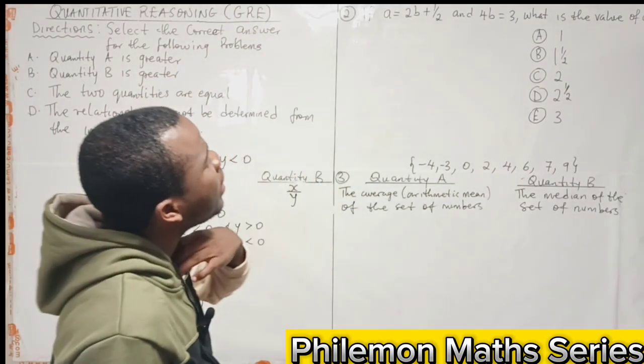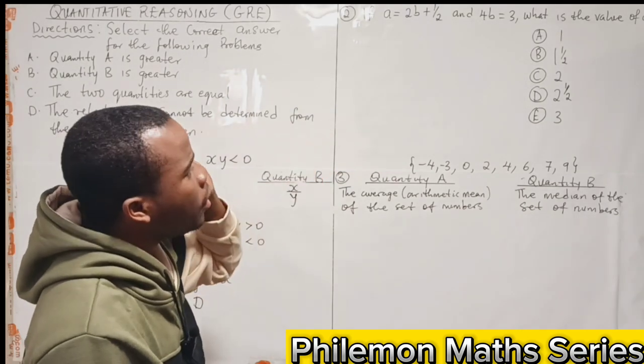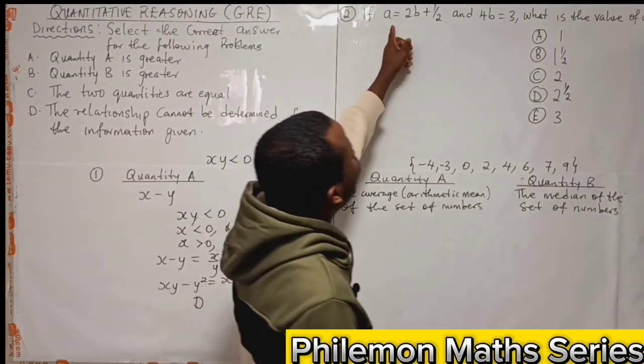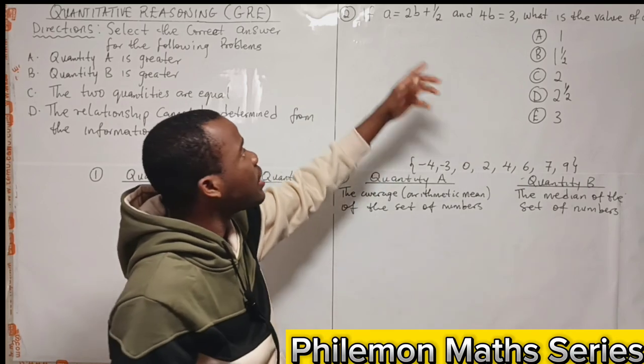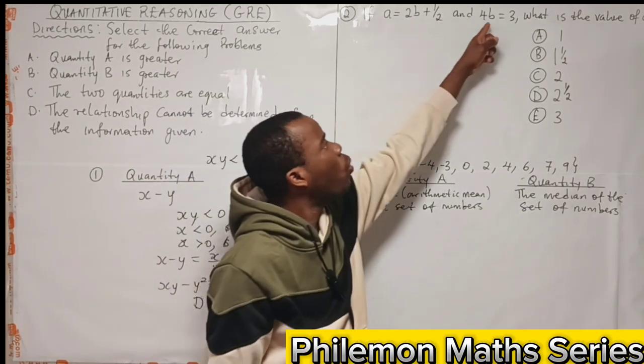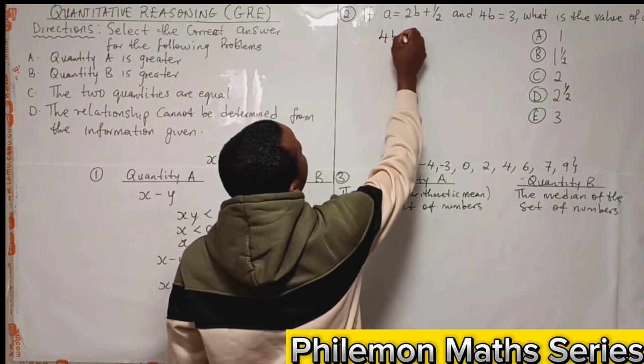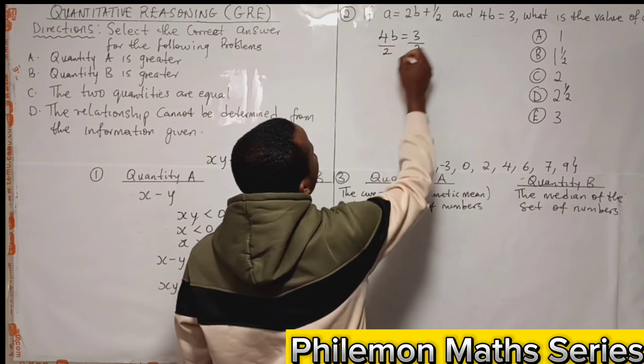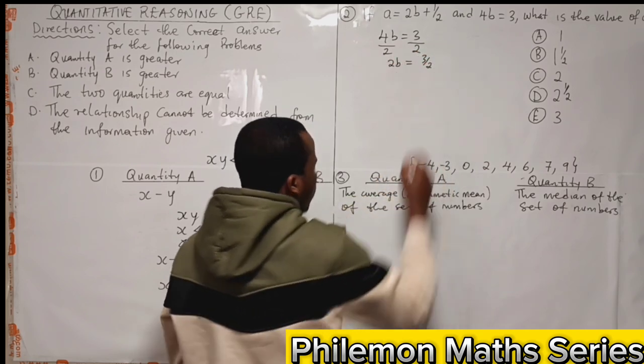Now let's look at the next problem. If a is given as (2b + 1)/2 and 4b is equal to 3, what is the value of a? Now for us to find the value of a, let's find the value of b first. So 4b is equal to 3. Divide both sides by 2, so we have that 2b is equal to 3/2.